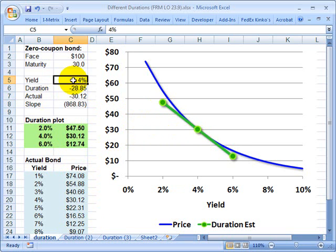So if I go to the yield here, I'll change this from 4% to 5%. And you can watch the graph. You can see now my line is still the tangent, but it's the tangent at 5%. And you can see my duration, which is really my modified duration, is about negative 28%. I'll go down to 3%.